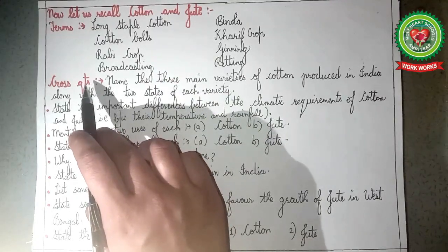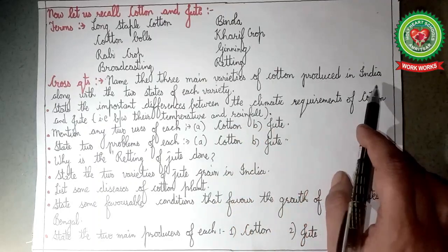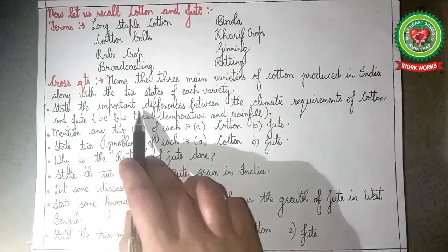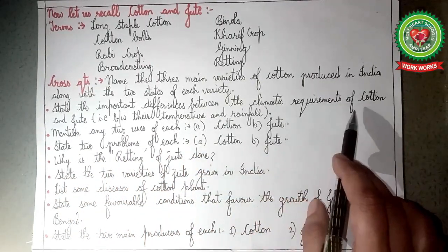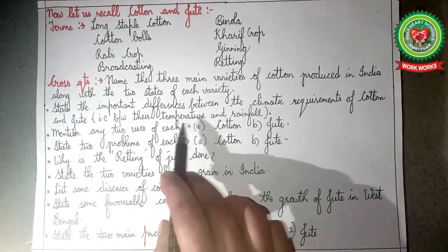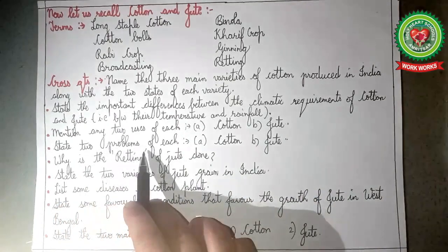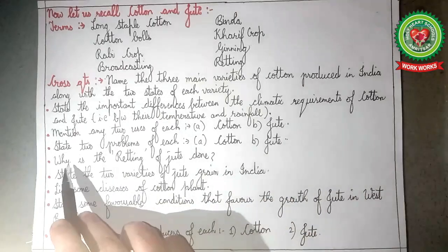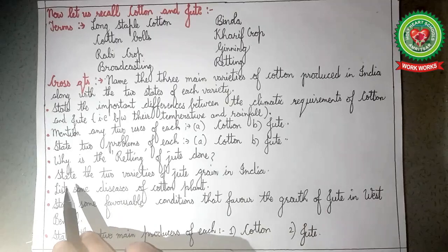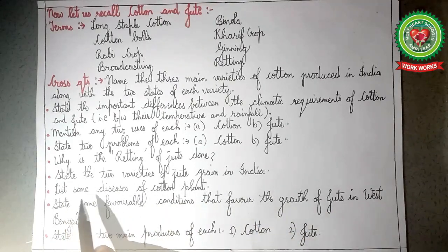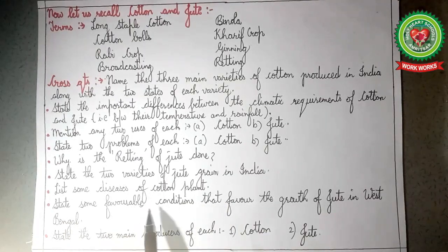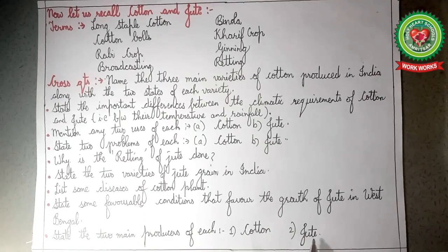Some cross questions related to cotton and jute: name the three main varieties of cotton produced in India along with two states for each variety; state the important differences between the climatic requirements of cotton and jute regarding temperature and rainfall; mention any two uses of each — A. cotton, B. jute; state any two problems of each; why is the retting of jute done; state the two varieties of jute grown in India; list some diseases of cotton plant; state favourable conditions for jute growth in West Bengal; and name the two main producers — cotton and jute states.